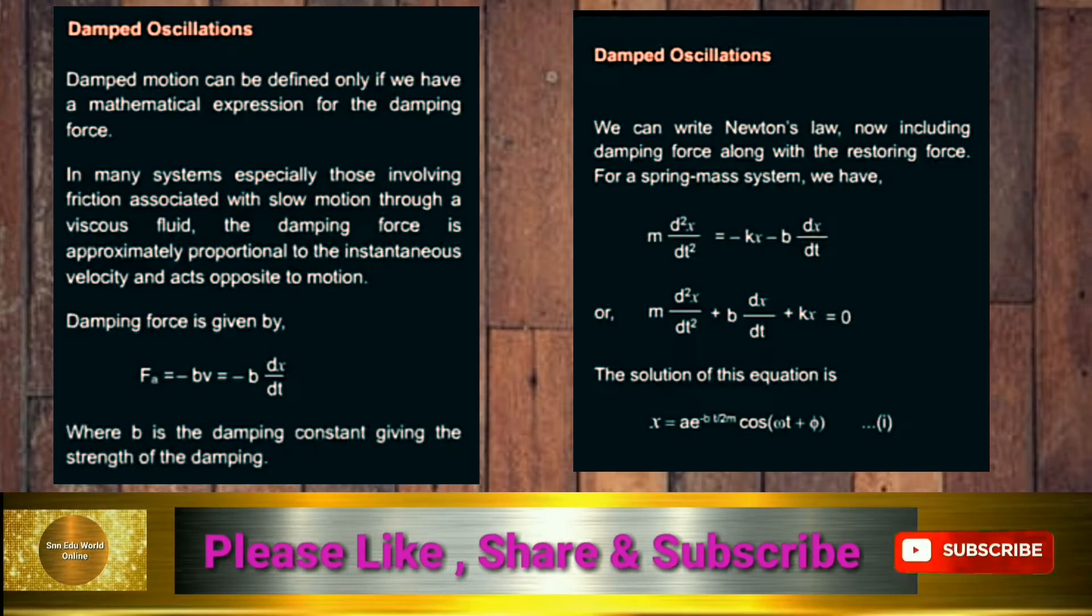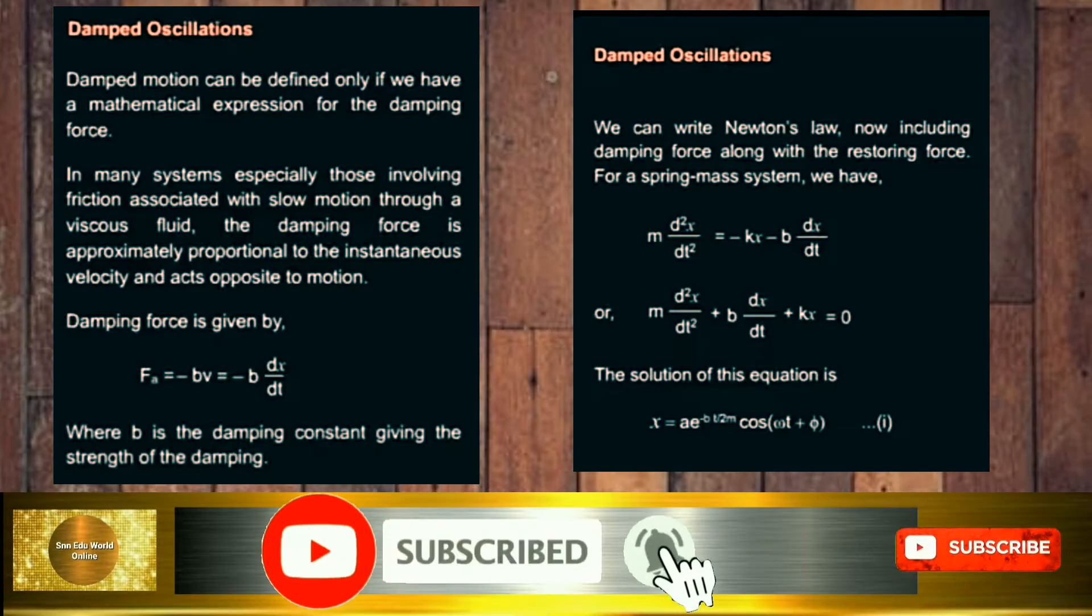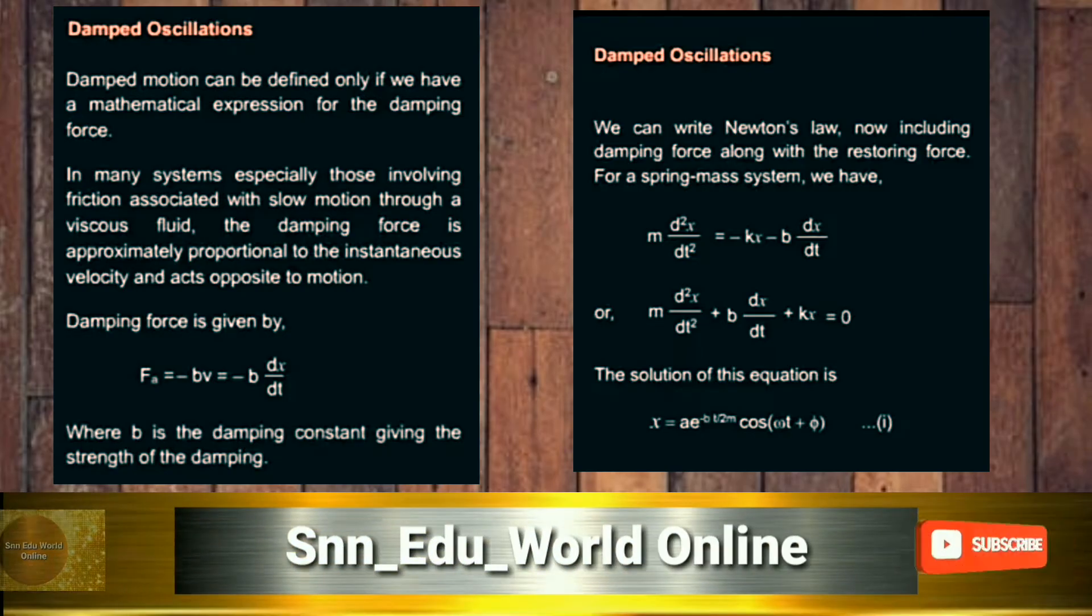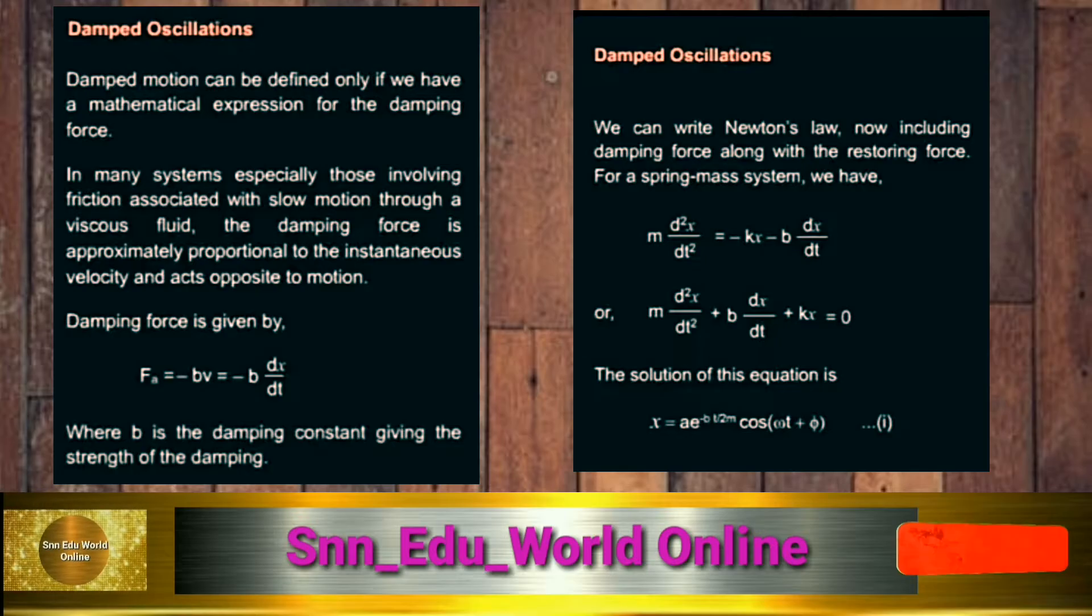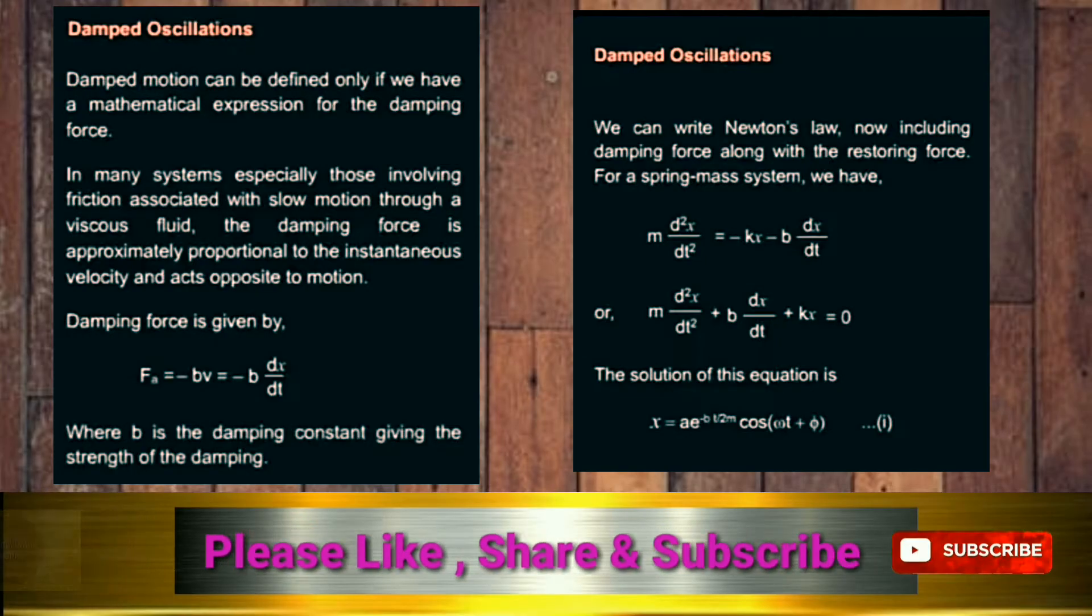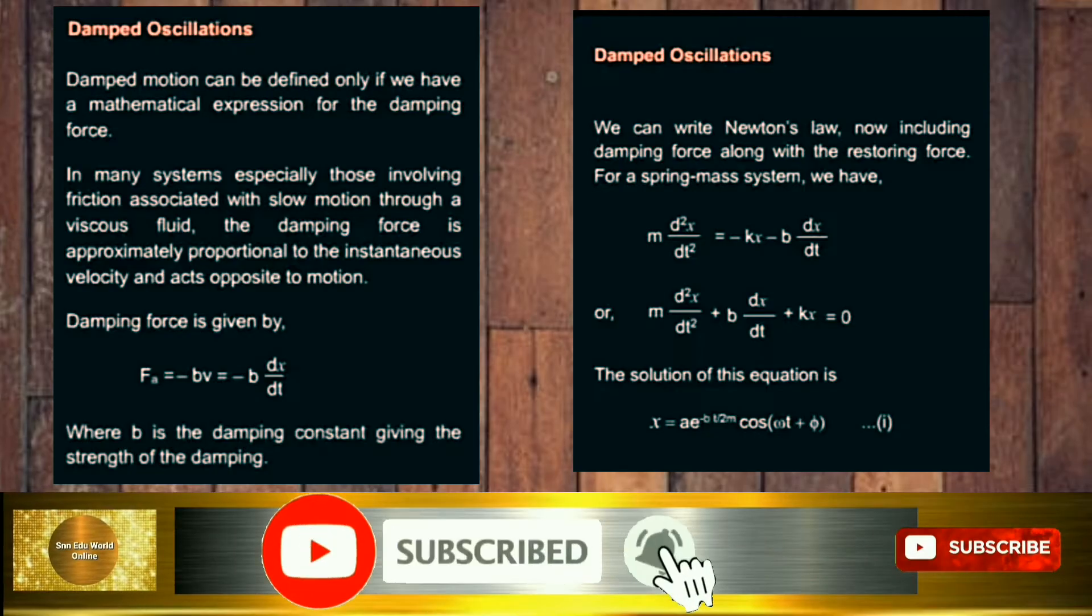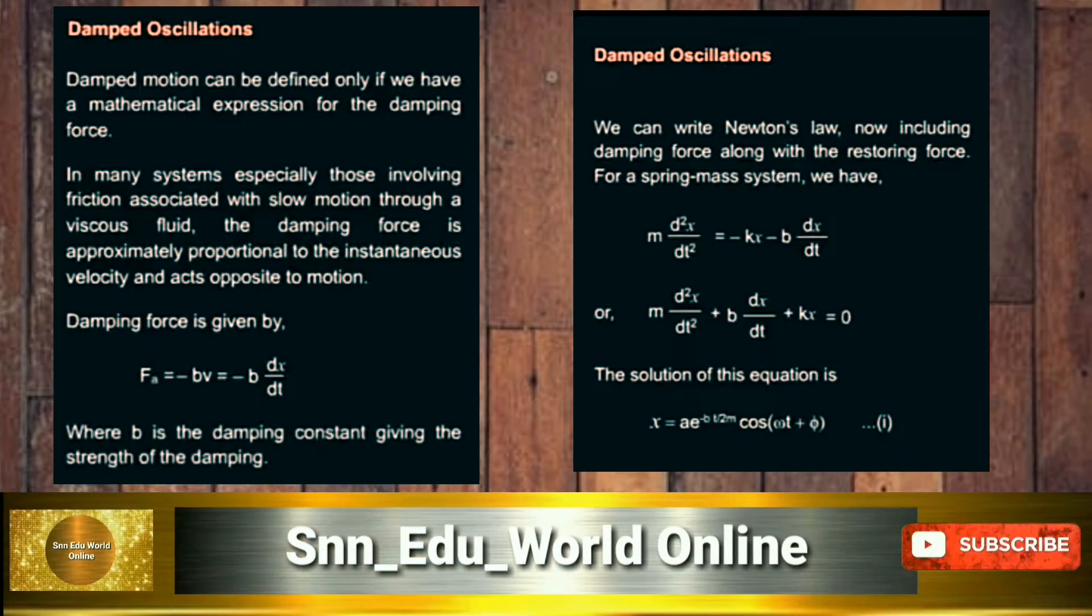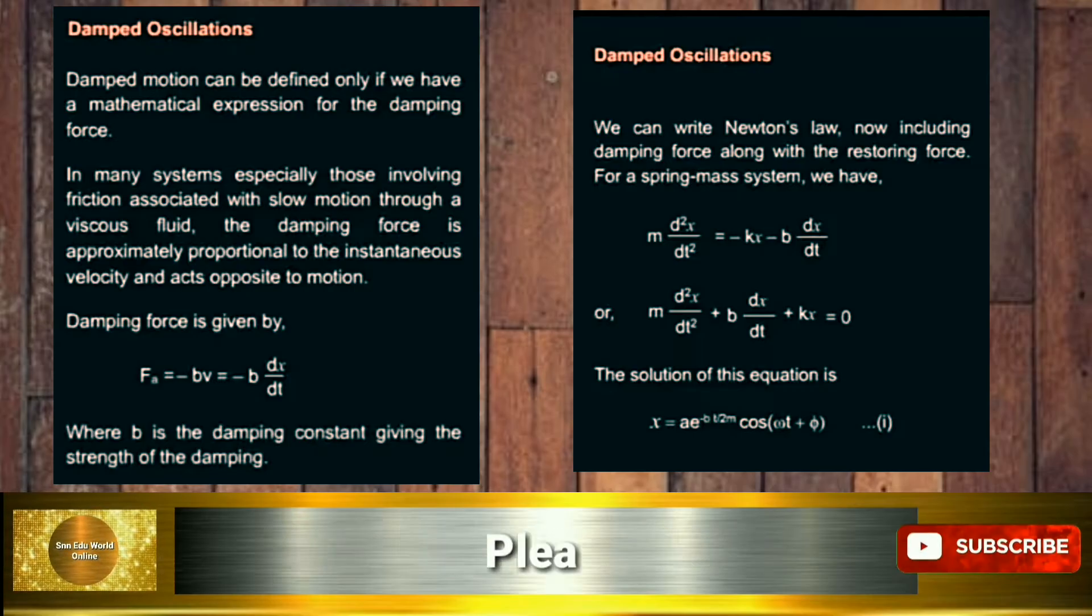Damping force is given by F_d is proportional to velocity. So it is v, and if we remove the proportionality sign we get the constant b. So F_d can be given as minus bv, and velocity can be written as dx/dt. So finally we get minus b dx/dt as the damping force, where b is the damping constant giving the strength of the damping.